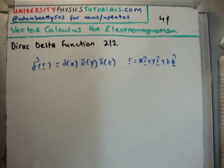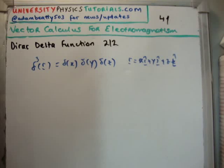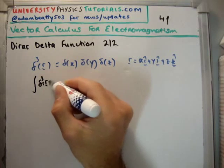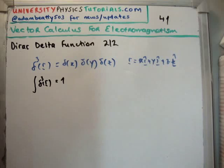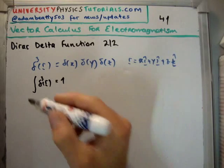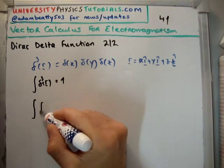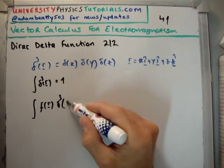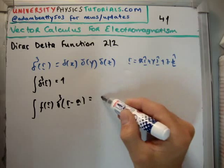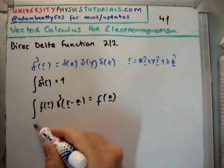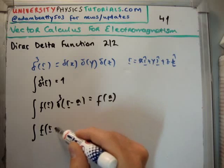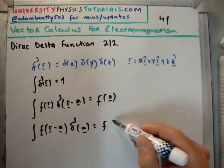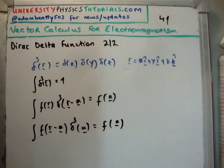This function is 0 everywhere, except at x equals 0, where it's infinite. But, as per normal, we find that the integral across all space of d3r equals 1. If we employ the sifting property, we find that f of r multiplied by d3r minus a is simply going to give us back f at a. Or, we could rewrite it as f of r minus a times d3a equals f at a.